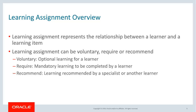A voluntary learning assignment is optional learning for a learner. A required assignment is mandatory learning to be completed by a learner before a due date. Learning recommended by a specialist or any other learner leads to a recommended learning assignment, which is optional as well.